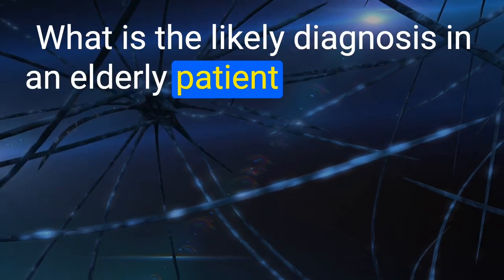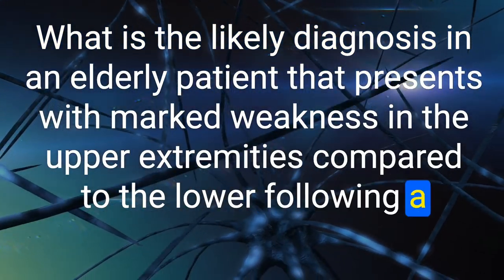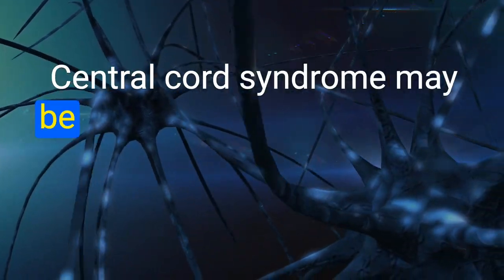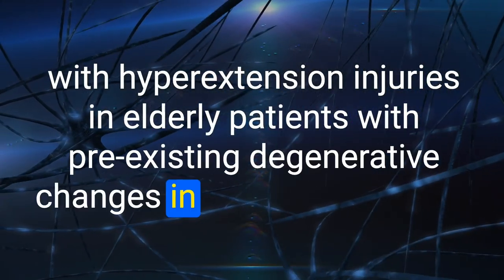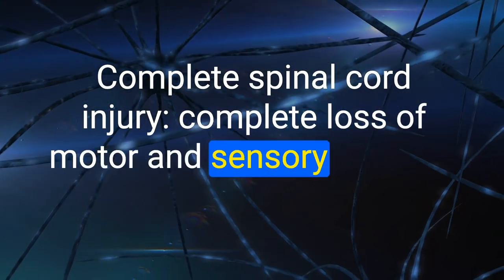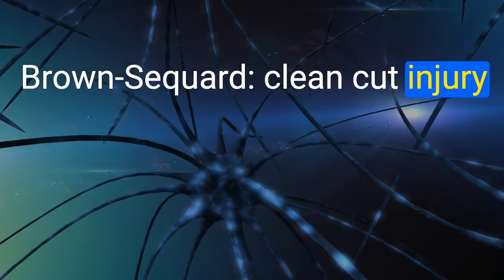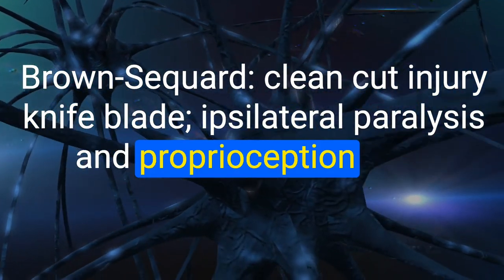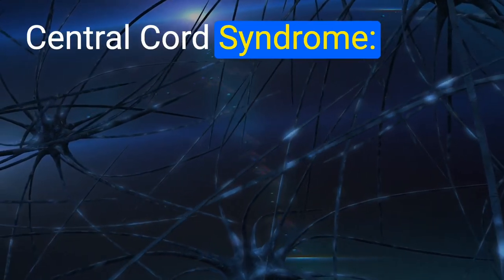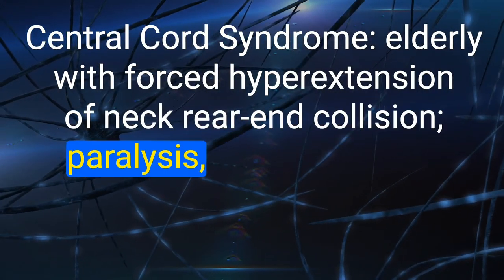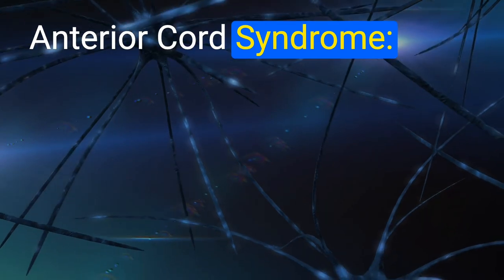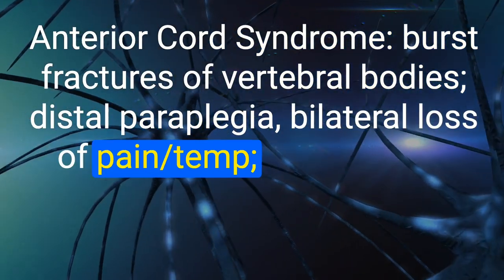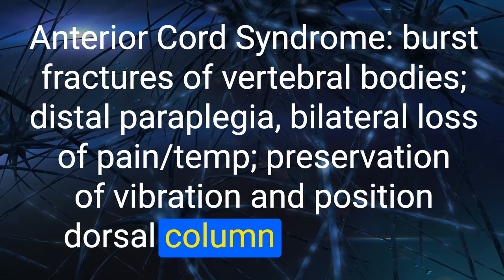101. What is the likely diagnosis in an elderly patient with marked upper extremity weakness following an MVA? Central cord syndrome. Spinal cord injury types review: (1) Complete — total motor/sensory loss below the lesion. (2) Brown-Séquard — ipsilateral paralysis/proprioception loss, contralateral pain/temp loss. (3) Central cord — elderly, forced hyperextension, upper extremity paralysis, distal extremities spared. (4) Anterior cord — burst fractures, paraplegia, bilateral pain/temp loss, dorsal column unaffected.